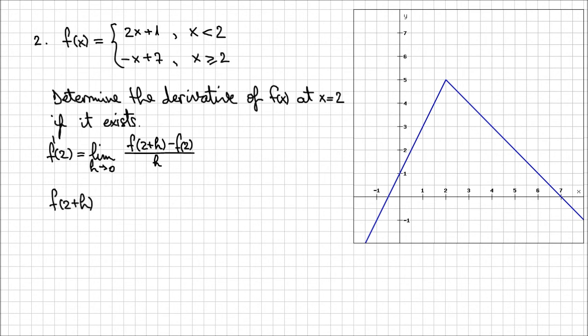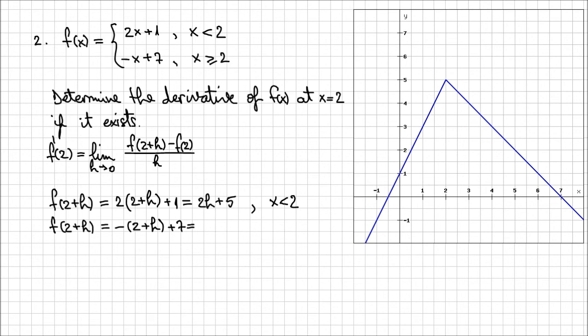I'm going to calculate f(2+h) on each branch. On the first branch where x is less than 2, I replace x with 2+h: it's 2 times (2+h) plus 1, which equals 2h plus 5. On the second branch where x is greater than or equal to 2, I get minus (2+h) plus 7, which results in minus h plus 5. For f(2) I can calculate it directly and it equals 5.